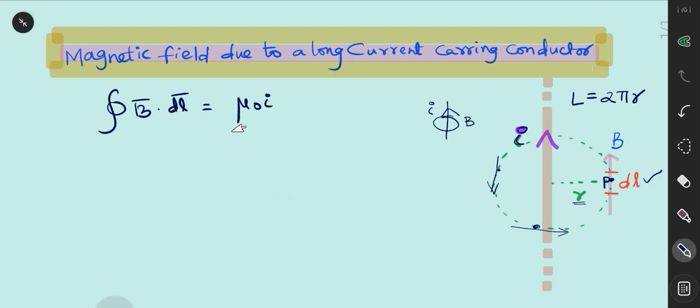Here, B bar dot DL bar is a dot product. So, B bar dot DL bar is equal to B·DL·cos θ.